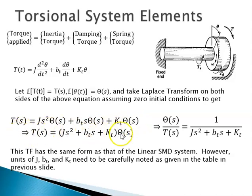You can arrange the terms appropriately and write Θ(s)/T(s). With theta as the output and T as the input, this equals 1/(Js² + B_T·s + K_T). You can see that this transfer function has the same form as that of a linear spring-mass-damper system. The change is that the units of the quantities are different, so the units of this transfer function are radians per newton meter.